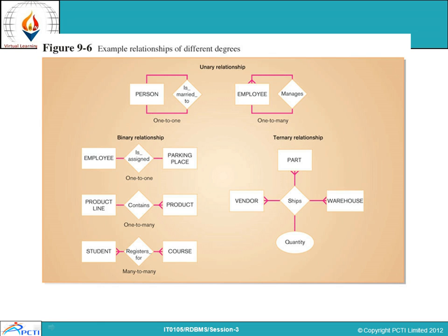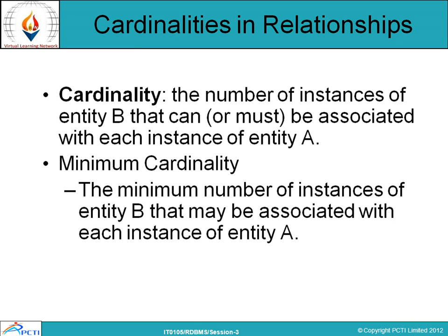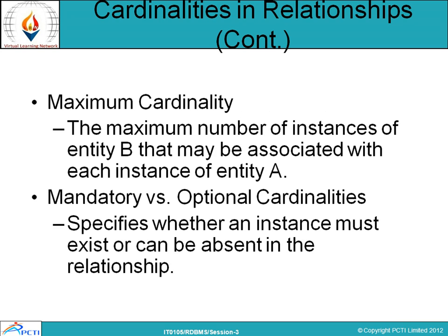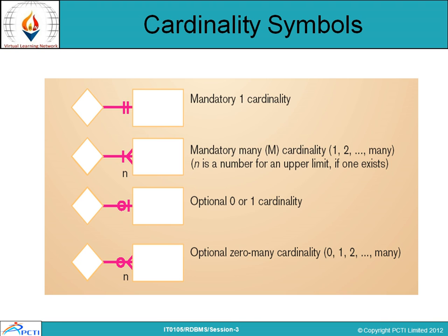A vendor ships many parts to many warehouses, with a quantity attribute. Cardinality is the number of instances of entity B that can be associated with each instance of entity A. Minimum cardinality is the minimum number of instances of entity B associated with each instance of entity A. Maximum cardinality is the maximum number that can be linked. Mandatory versus optional cardinality specifies whether an instance must exist or can be absent in the relationship. The cardinality symbols include mandatory one, many, optional zero-or-one, and optional zero-or-many.